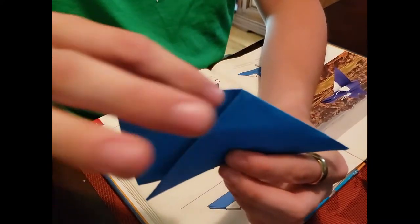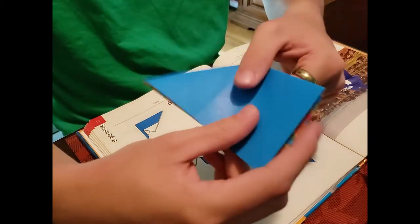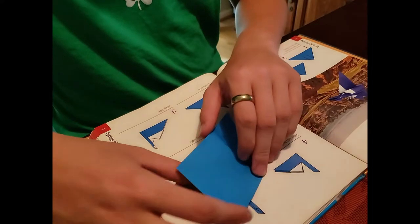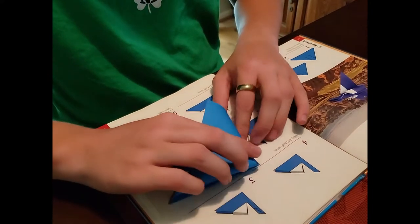Now you see you have a triangle and this square here. You're going to flip it over like so. And you're going to have like a weird shape. And you're going to do the same thing as before and fold it like a triangle.